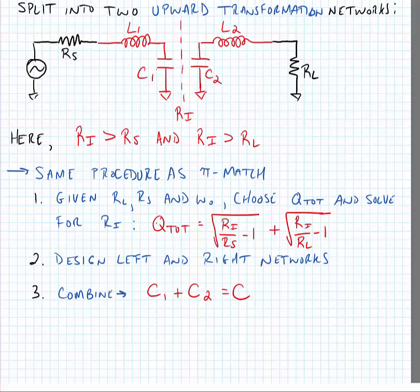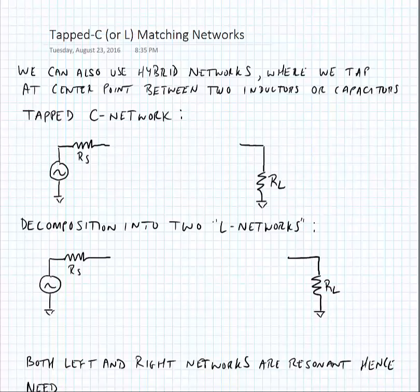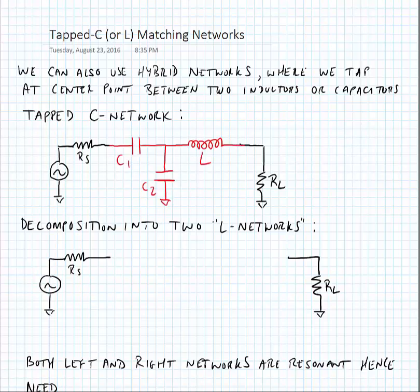Next we'll look at a couple of specialty networks: TAP-C and TAP-L. We can create hybrid networks where we tap at the center point between two inductors or two capacitors instead of using a symmetric network like the T or pi. In the TAP-C network we have two capacitors C1 and C2, and an inductor going into the common point between the two capacitors.